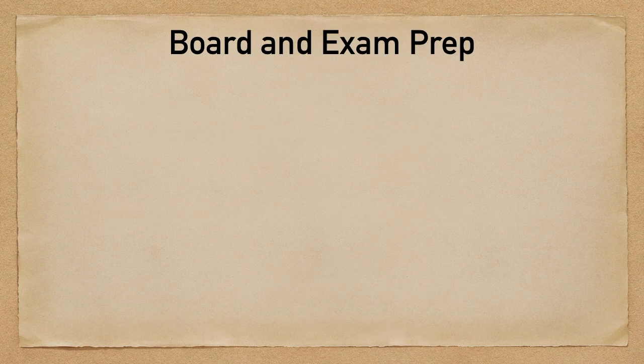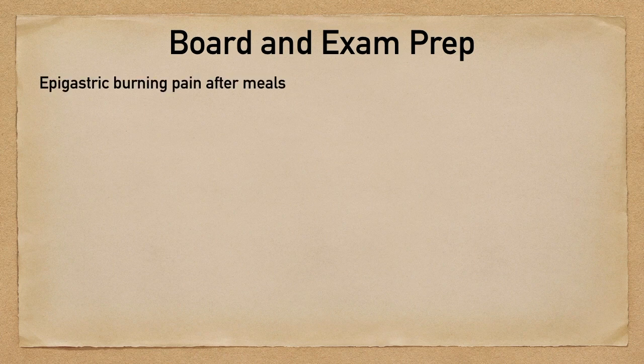Let's wrap this up by talking about different presentations that medical exams and board exams like to use to describe upper abdominal pain. It's not to say that all patients present this way, but this is how they show up in question stems on tests. If a patient presents with epigastric pain that's worse after meals and they describe it as burning, think about things like peptic ulcer disease, gastritis, or GERD. If a patient presents with right upper quadrant abdominal pain that's worse after meals, you'll want to consider things like biliary colic.